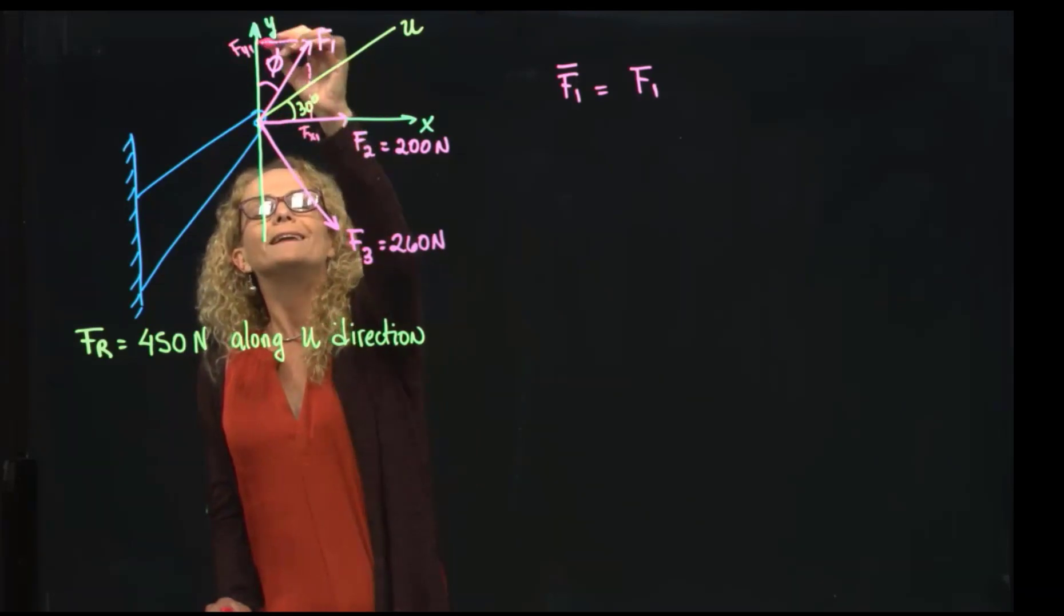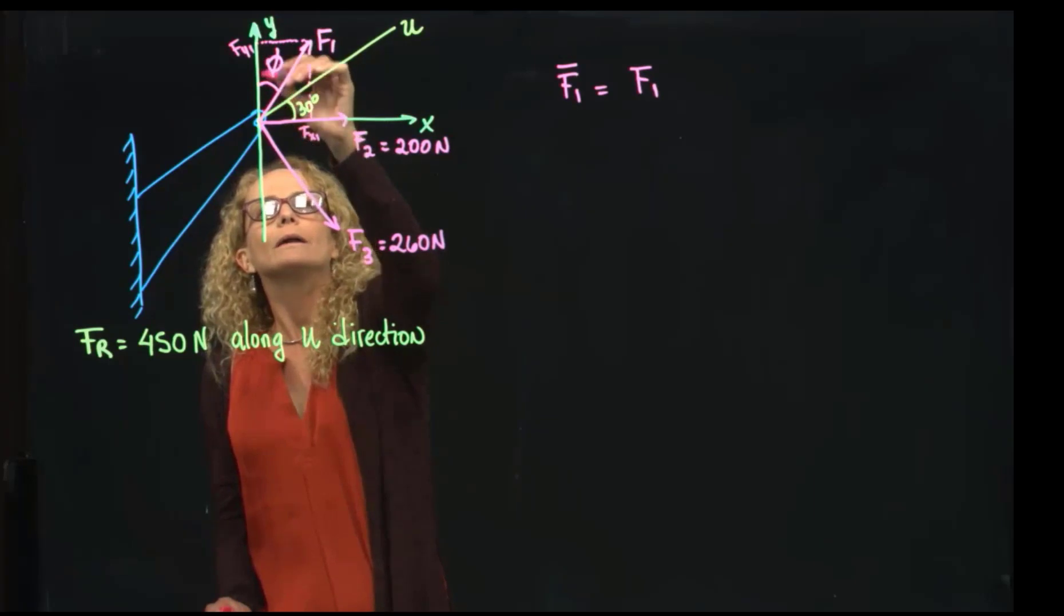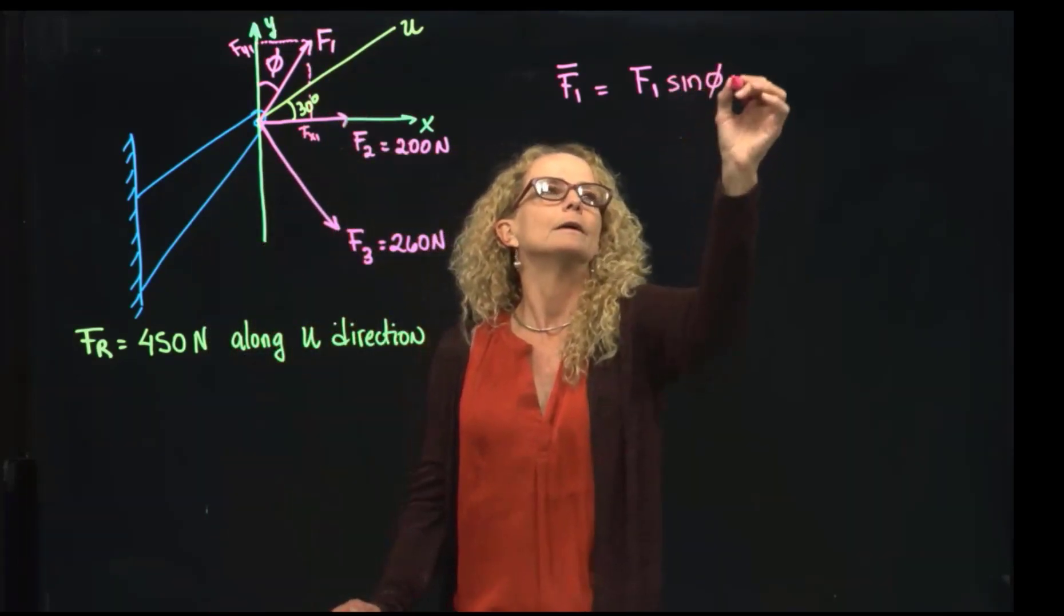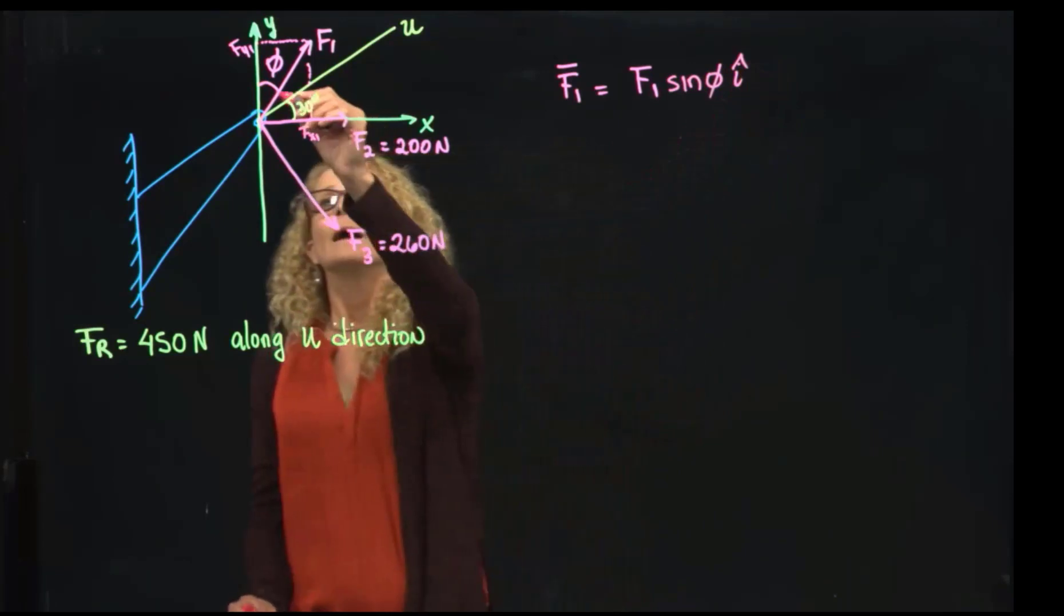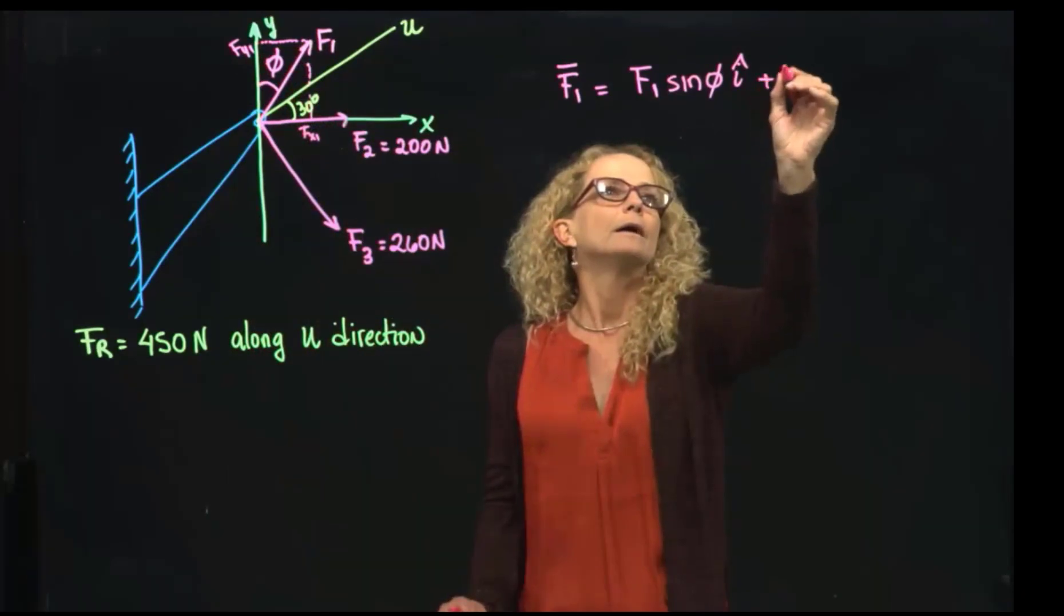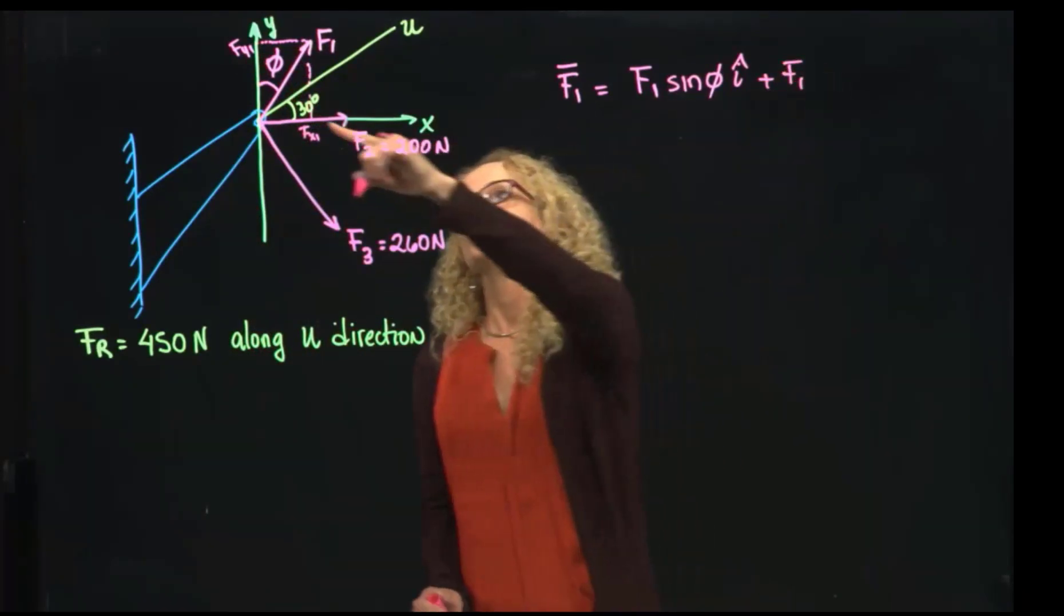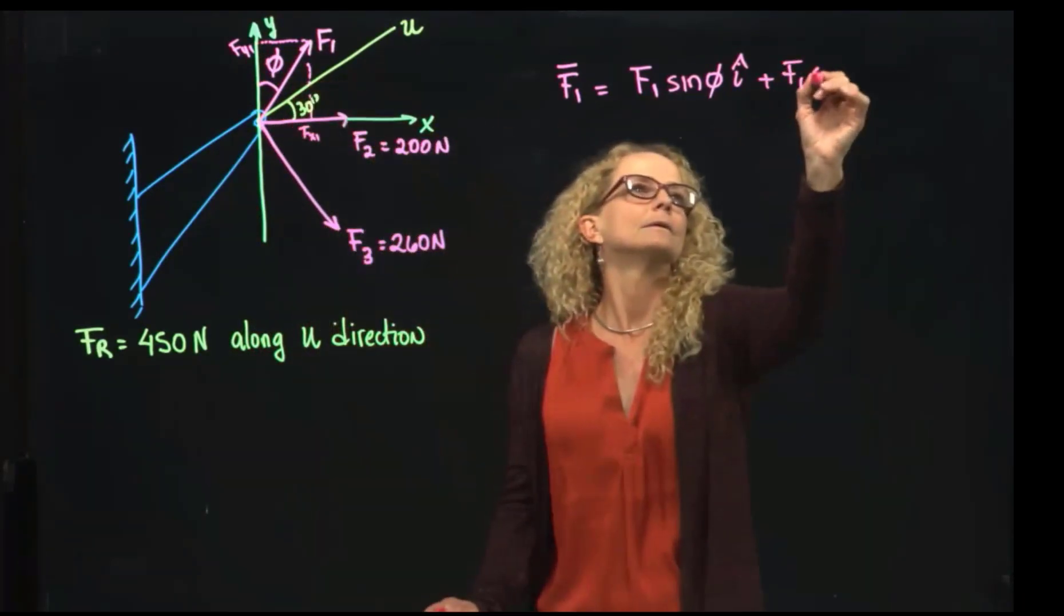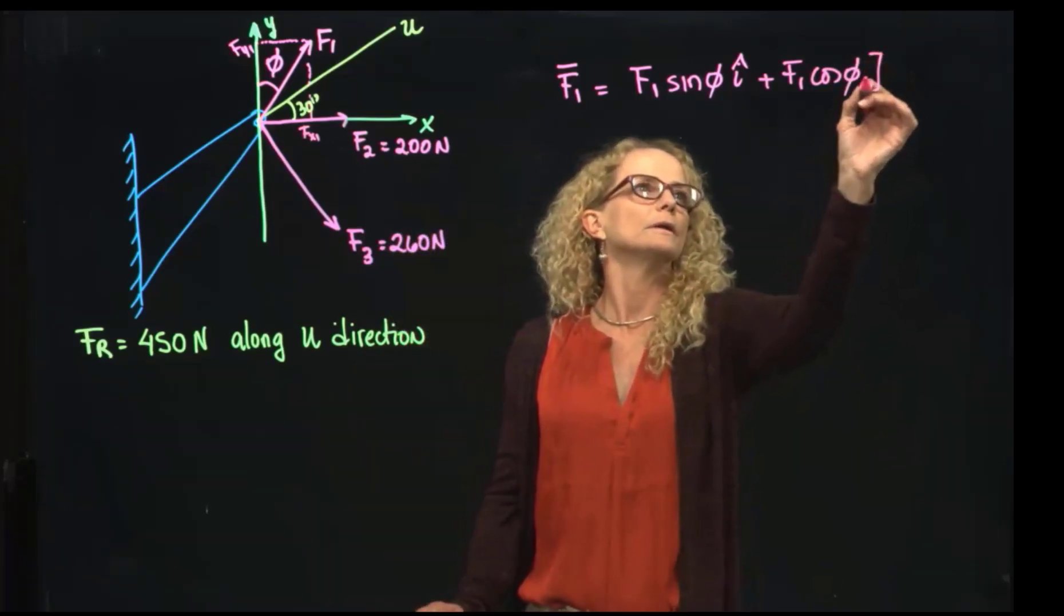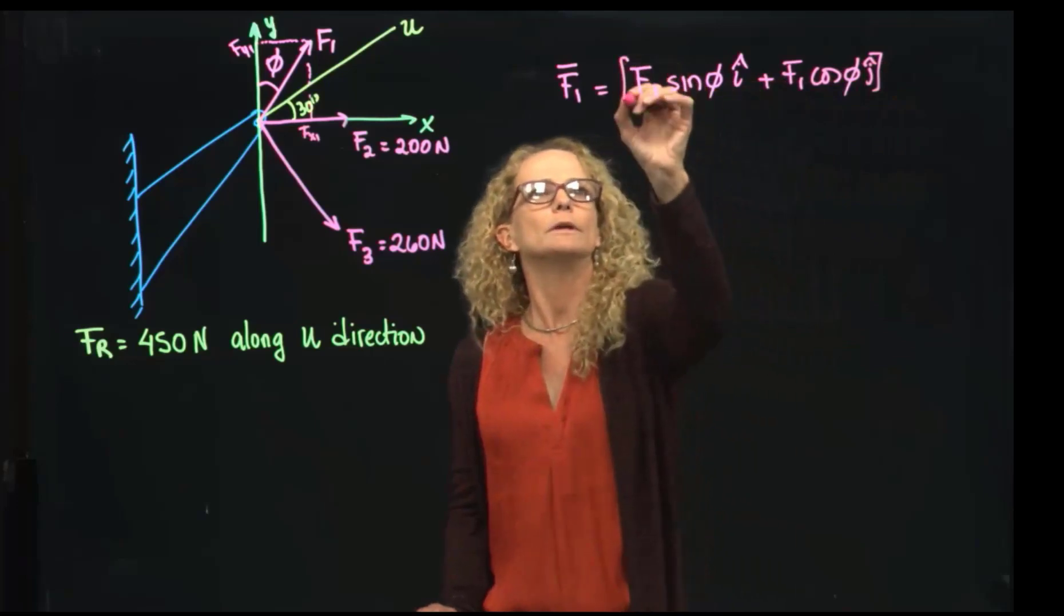The Fx1 will be the opposite of this triangle. As you know, the sine is defined as the opposite divided by the hypotenuse. So it will be F1 sine of phi in I in the positive direction. And then the y will be F1 cosine of phi. That will be in j direction, in newtons.